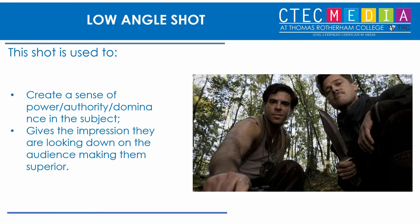Now we move on to angles. The first is a low angle shot, which is most commonly used to make the subject appear dominant. In this shot, you've got these two guys looking down at you, which creates that sense of dominance — it gives the impression that the people in the shot are looking down on you, making them look more physically imposing, more dominant, and giving them more authority.